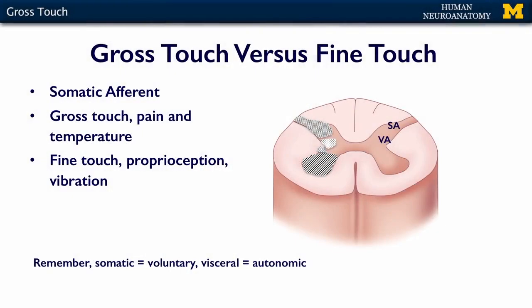There's another set of modalities: fine touch, proprioception — knowing where your arms, legs, and body are in space — and vibration sense. Those three modalities travel together within the spinal cord and within the brain.